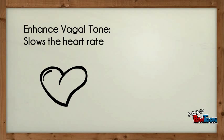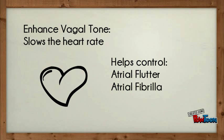Cardiac glycosides also enhance vagal tone, which slows the heart rate. A lower heart rate helps control supraventricular dysrhythmias, such as atrial flutter and atrial fibrillation.